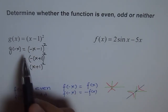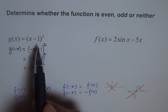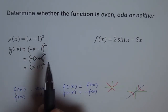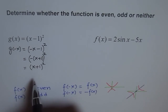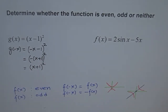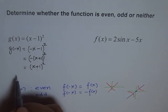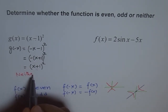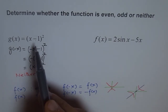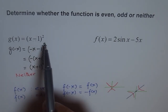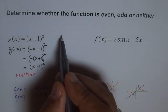I do not get x minus 1 whole square, so it is not even — it is not the same as g(x). Nor is it minus of (x minus 1) whole square, so it is not odd either. Because they are different — there is a minus here and a plus there — this function is neither odd nor even.